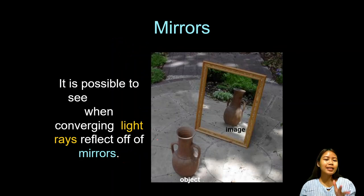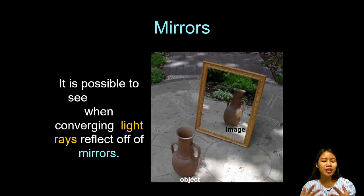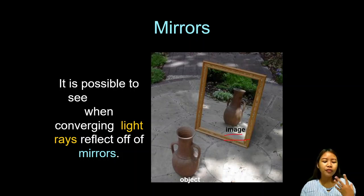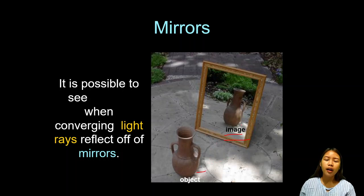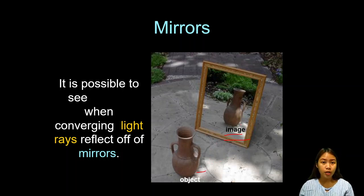Now let us talk about mirrors. It is possible to see an image when converging light rays reflect off of mirrors. When there is a reflection of light in a mirror, we can see images. For example, the thing you can see inside the mirror is an image.